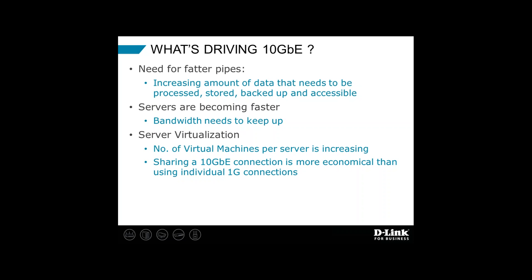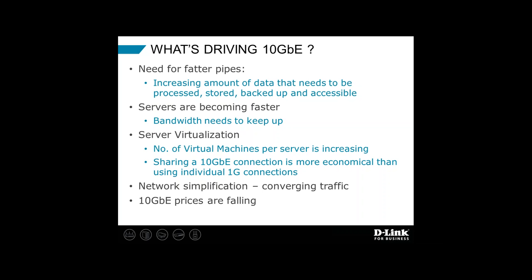With server virtualization, one server is partitioned into several virtual machines, and the number of virtual machines per server continues to increase. In the days of old you would find eight gigabit ports on the back of a server; today's servers have one or two 10 gig ports — it's more economical, less cabling, and it actually increases the bandwidth. We're seeing more and more 10 gig connections on servers and storage. Networks are getting simpler, traffic is converging — fiber channel over Ethernet is a good example of storage traffic now running on an Ethernet network. And probably the most important bullet: 10 gig prices continue to come down, and all of these factors together continue to drive more and more 10 gig every year in business networks.